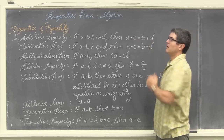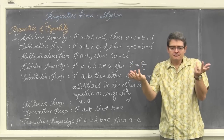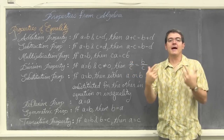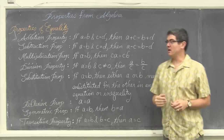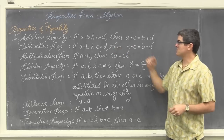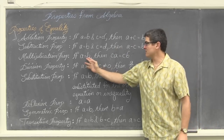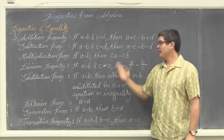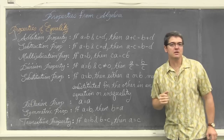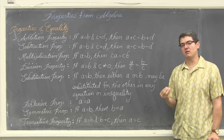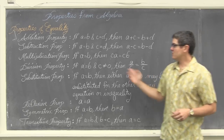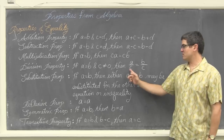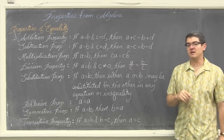The same concept applies with the subtraction property — just subtraction instead of addition. The multiplication property states that if A equals B, then C times A equals C times B. So if two values are equal and we multiply the same value to both, they remain equal, just maybe larger or smaller. The division property states that if A equals B and C is not equal to zero, then A divided by C equals B divided by C.